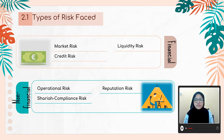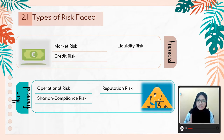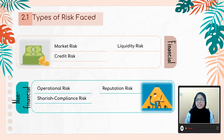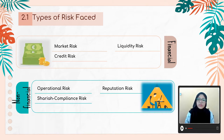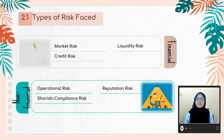There are two types of risk phases: financial risk and non-financial risk. Market risk, credit risk, and liquidity risk are classified as financial risk, while operational risk, Shariah compliance risk, and reputation risk are classified as non-financial risk.